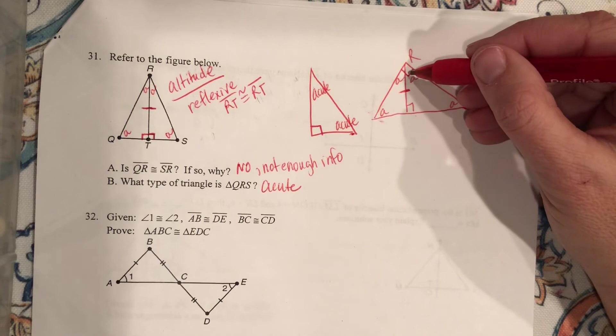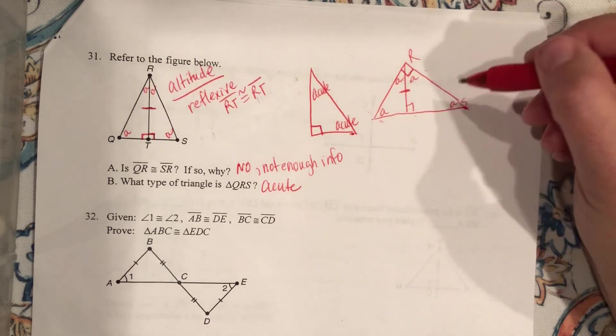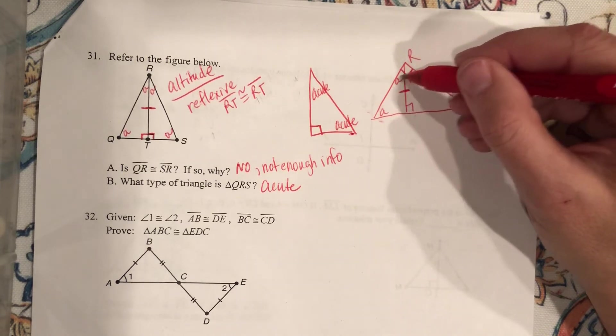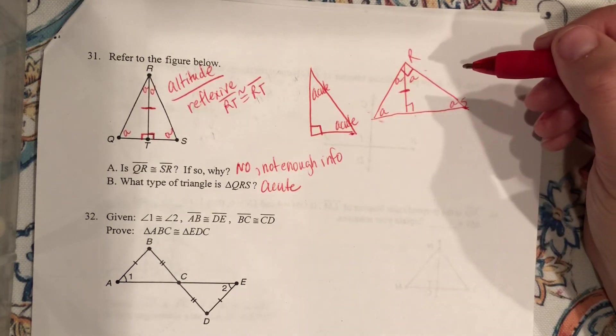Well, if that's a right angle right there, then I've got my relationship here. These two angles right here would still both be acute, okay? Okay.